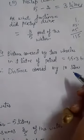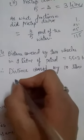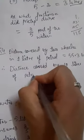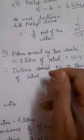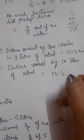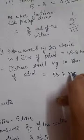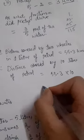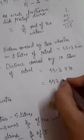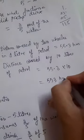Therefore, distance covered by 10 liter of petrol is equals to 55.3 multiplied by 10, which is equals to 553 kilometers.